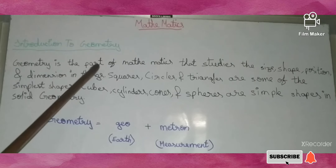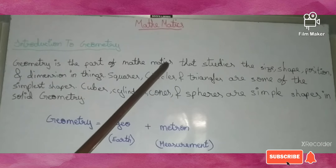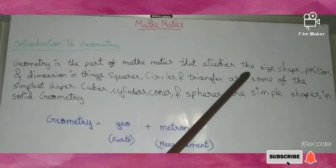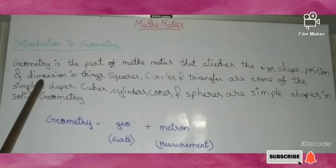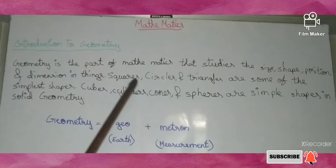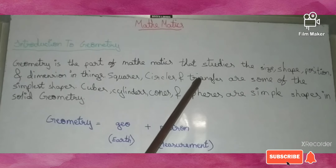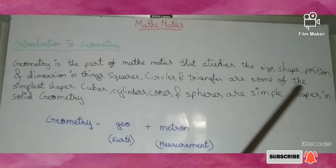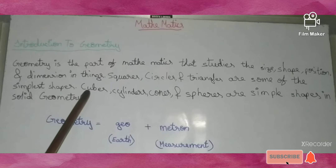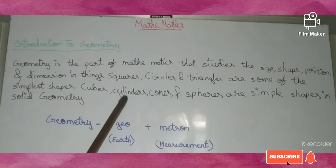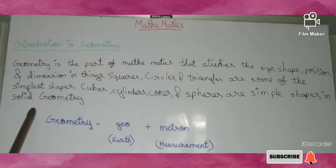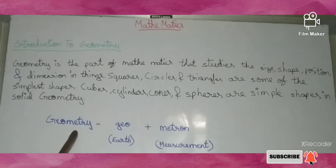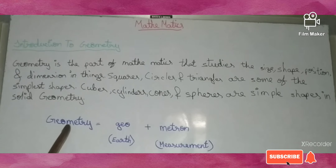Geometry is the part of mathematics that studies the size, shape, position, and dimension of things. Squares, circles, and triangles are some of the simplest shapes. Cubes, cylinders, cones, and spheres are simple shapes in solid geometry.